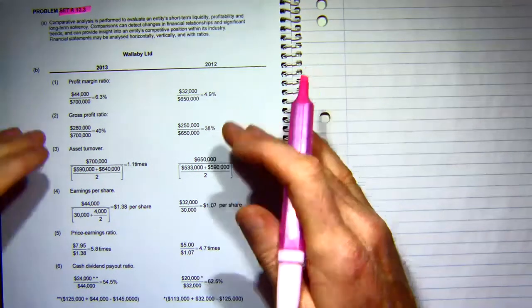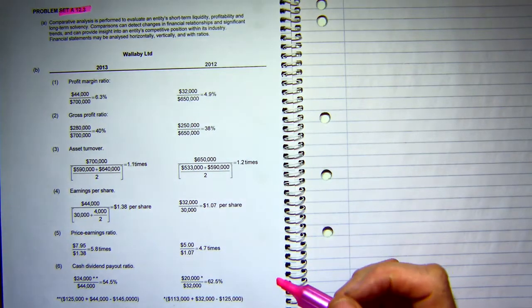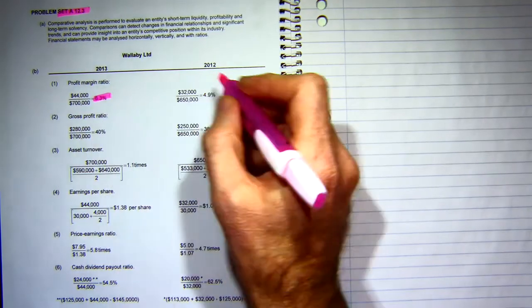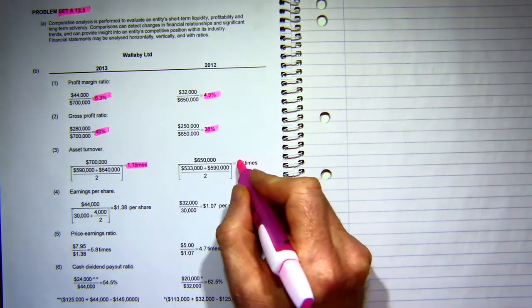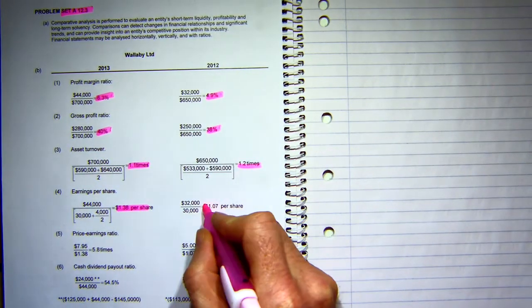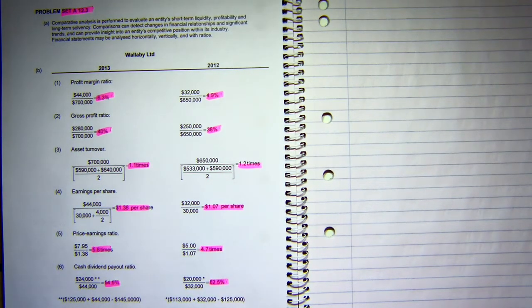The calculations have already been done. Now we're going to go through the interpretation section. What we're looking at is these numbers here, and I'll highlight them all - we're going to look at whether this company has improved or not improved.